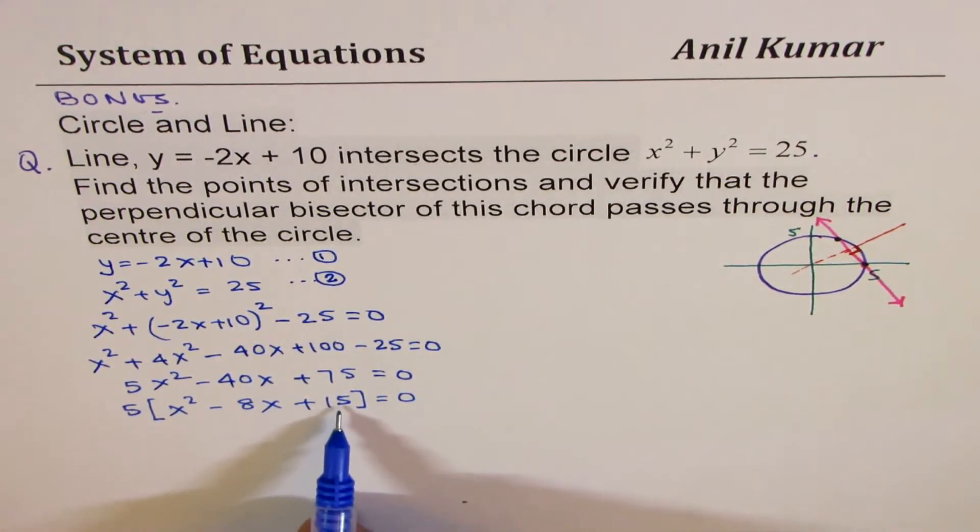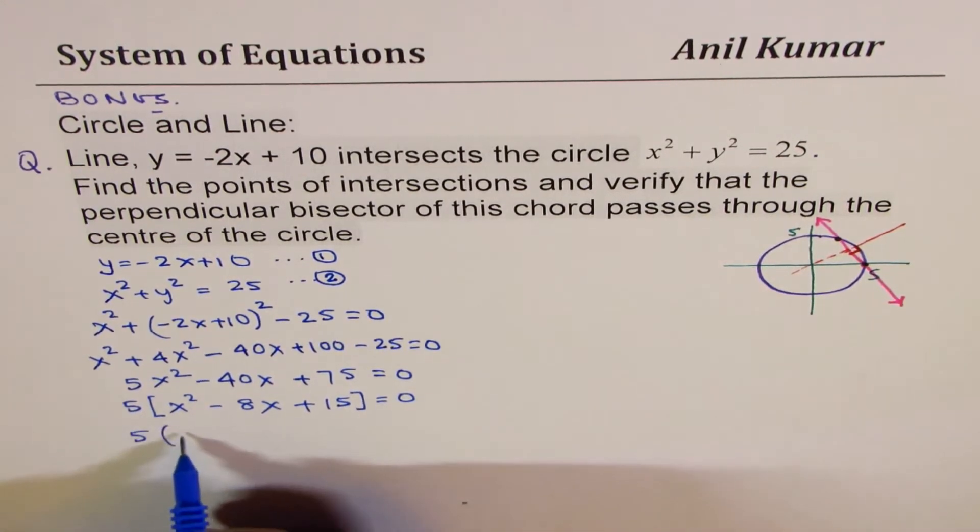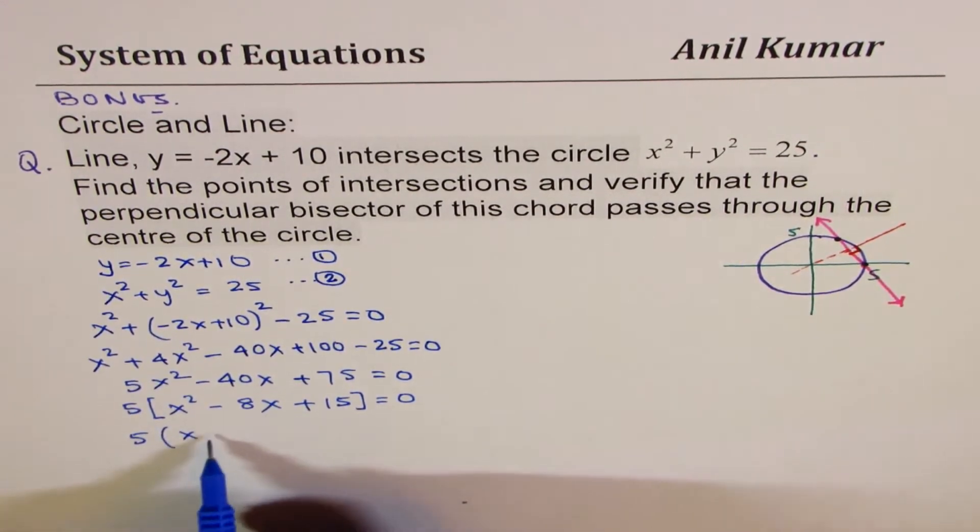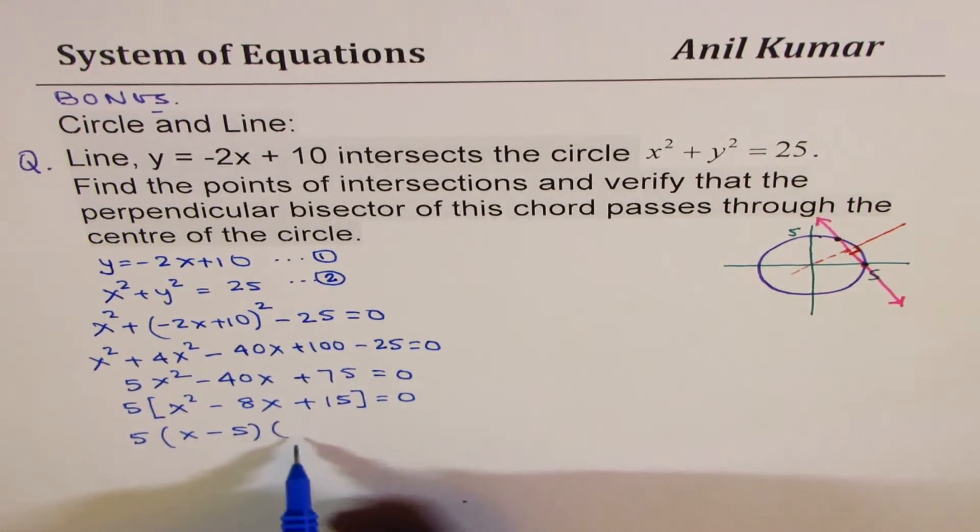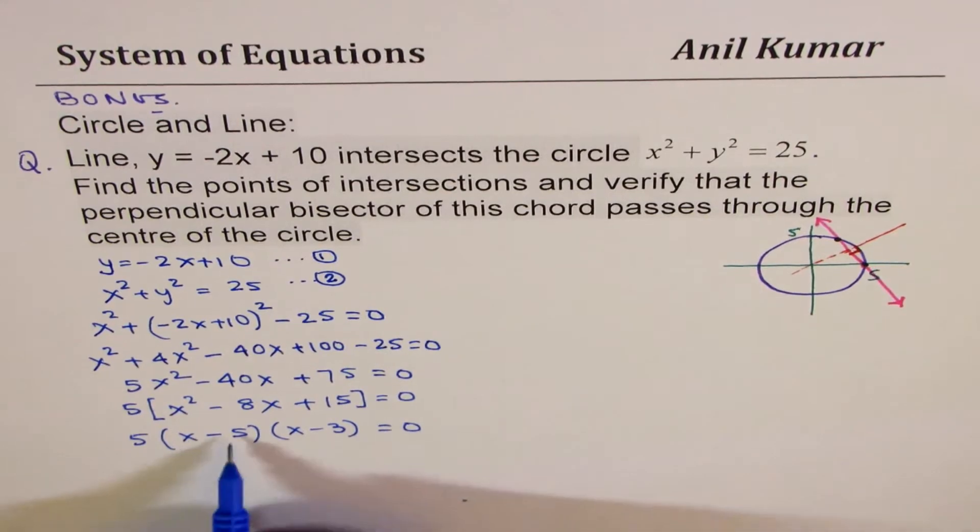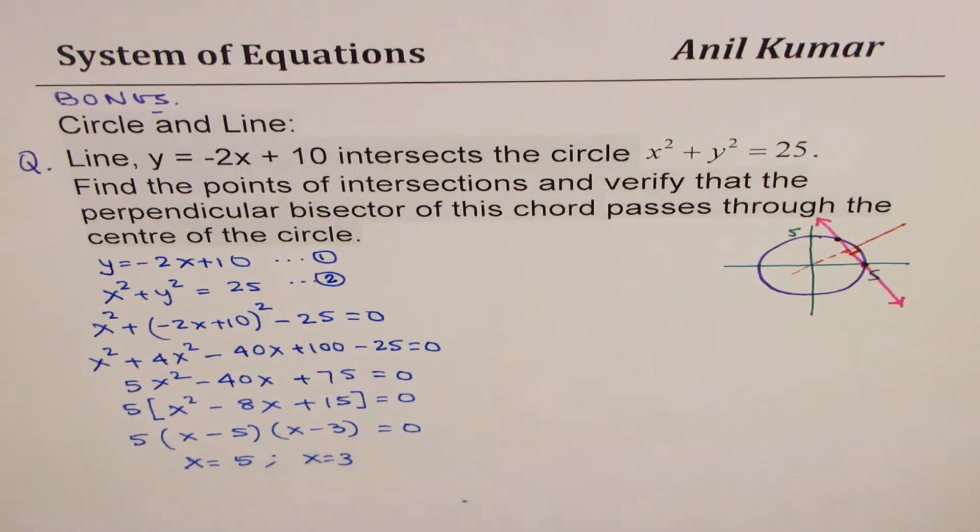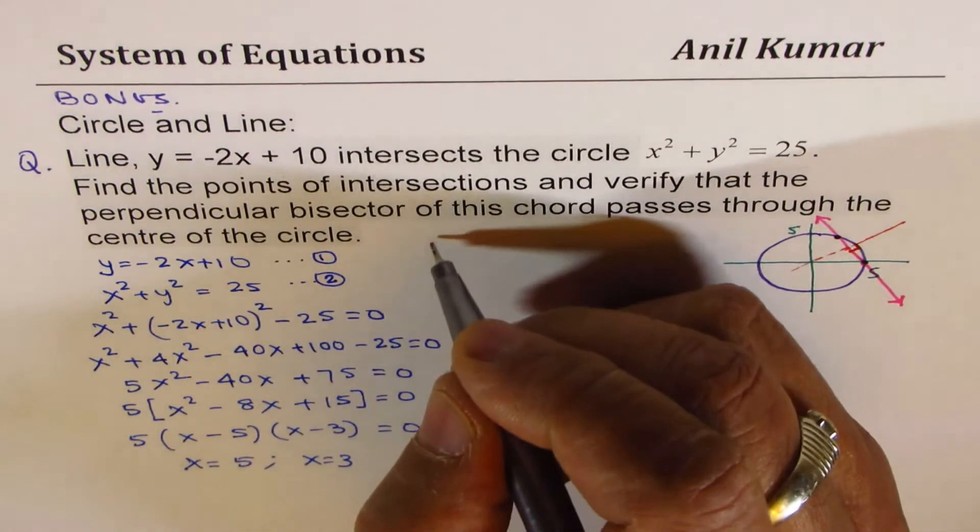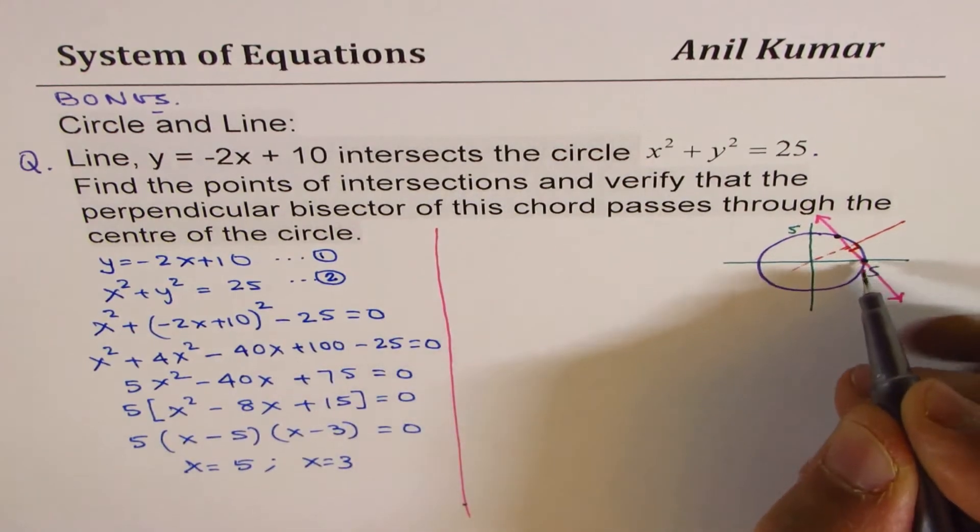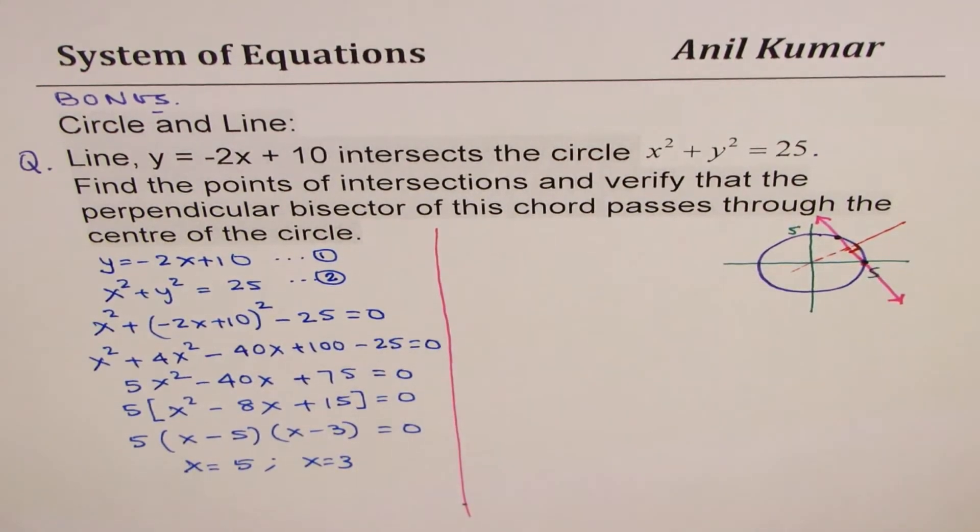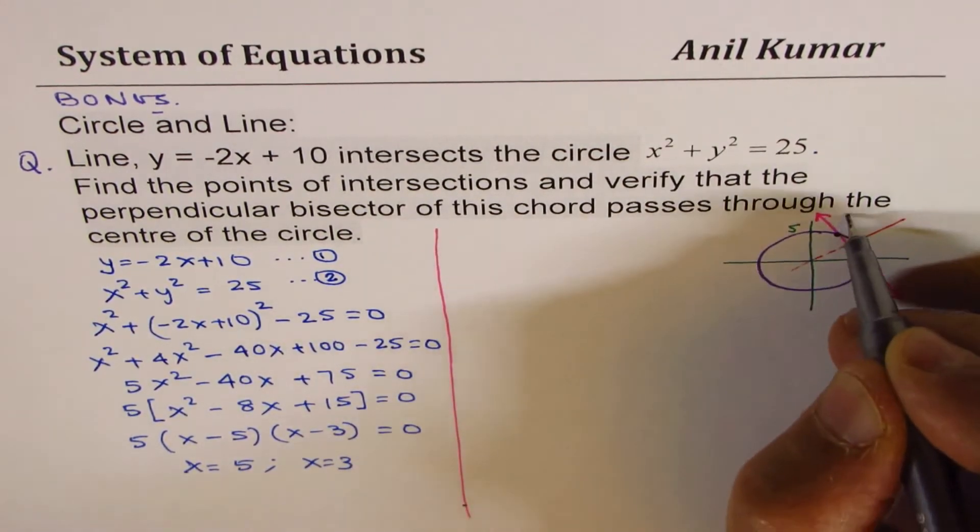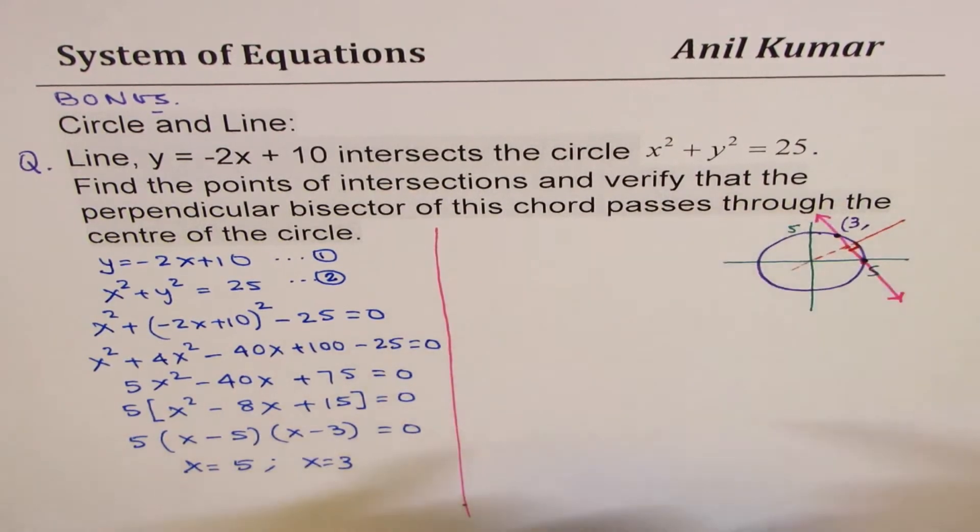This could be factored. 15 is 5 times 3, so I could write this as x minus 5 times x minus 3 equals 0. And clearly, x equals 5 and x equals 3 are the two values which will give the solution. So as expected, we did get one point as 5. The other point is at 3, x value.